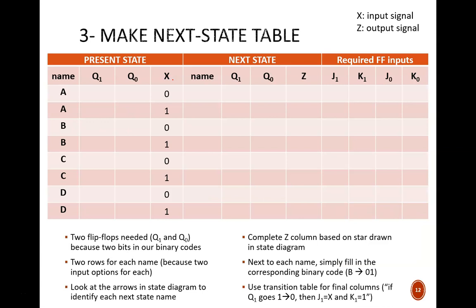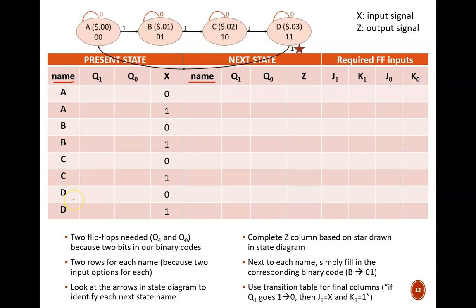Step 3 is to make the next state table. This contains a lot of information, so let's go through it piece by piece. First, there are three broad sections. Present state, next state, and required flip-flop inputs. This should look familiar to our analysis tables from last week, with the big difference being that the two right sections are switched. Under the state sections, there is a column called Name, which will hold the state names A, B, C, D from our state diagram. Next to that, two flip-flops are listed, Q1 and Q0. Why two? Because our state diagram used two-bit codes.